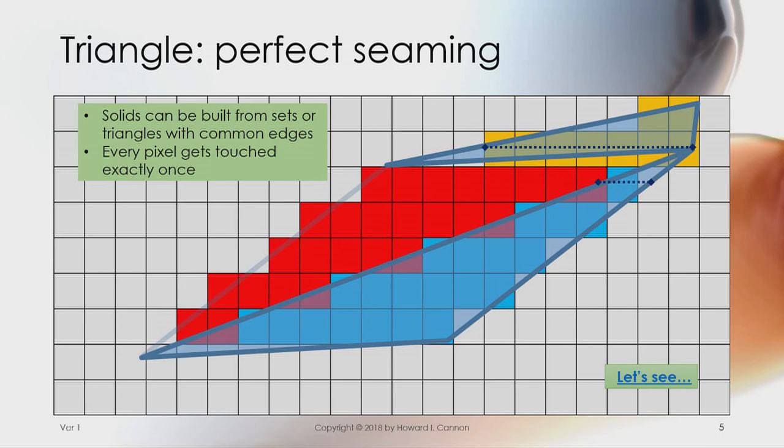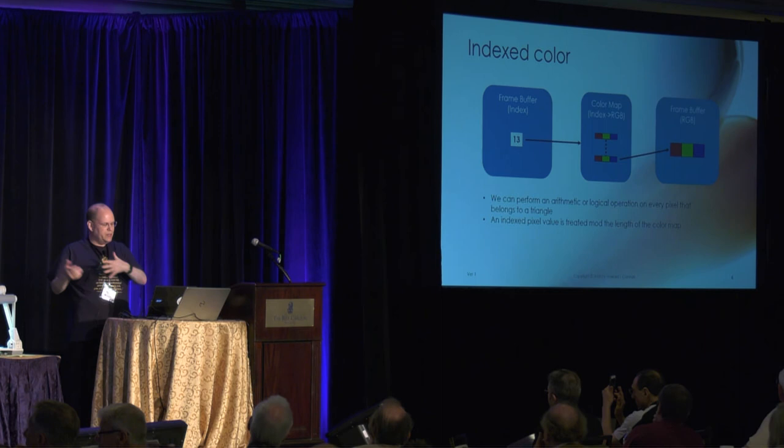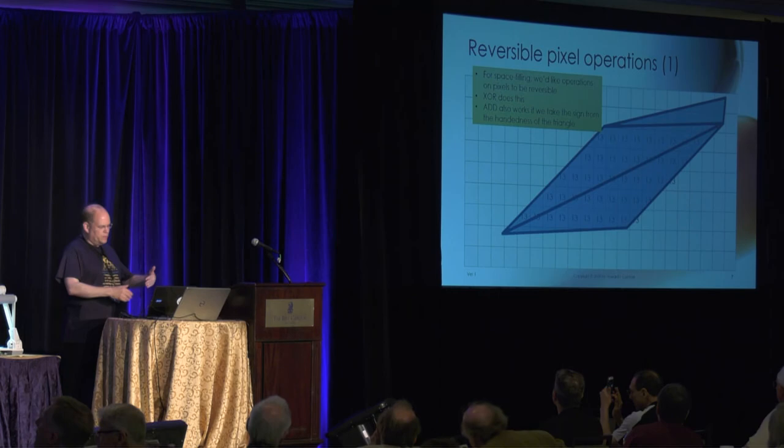So to do this we're going to treat the pixels not as independent colors as it's done a lot these days. We're going to treat them as indexes into some sort of color table. And so for example, they seem to be filled with 13s, how odd.